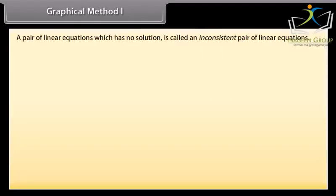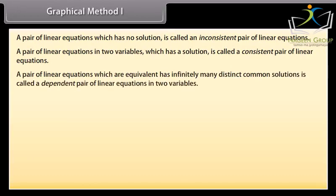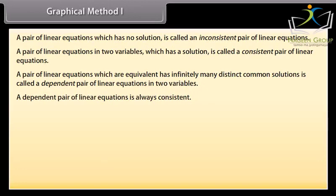A pair of linear equations which has no solution is called an inconsistent pair of linear equations. A pair which has a solution is called a consistent pair. A pair which is equivalent and has infinitely many distinct common solutions is called a dependent pair of linear equations in two variables. A dependent pair of linear equations is always consistent.